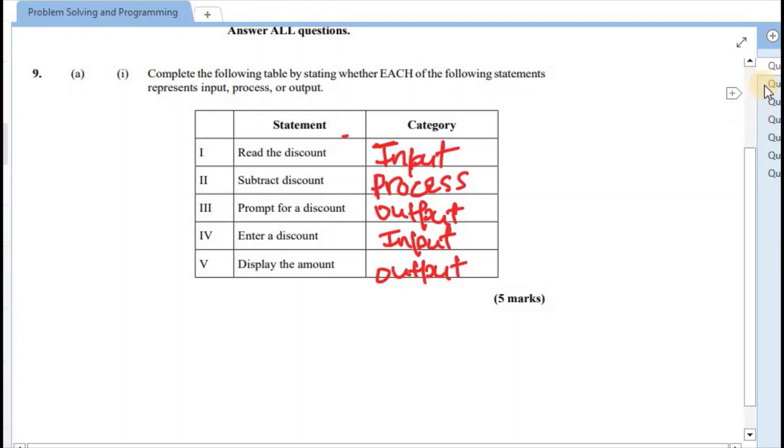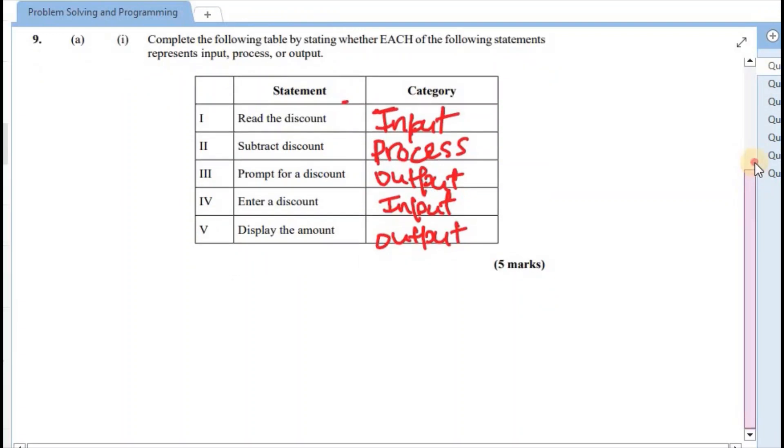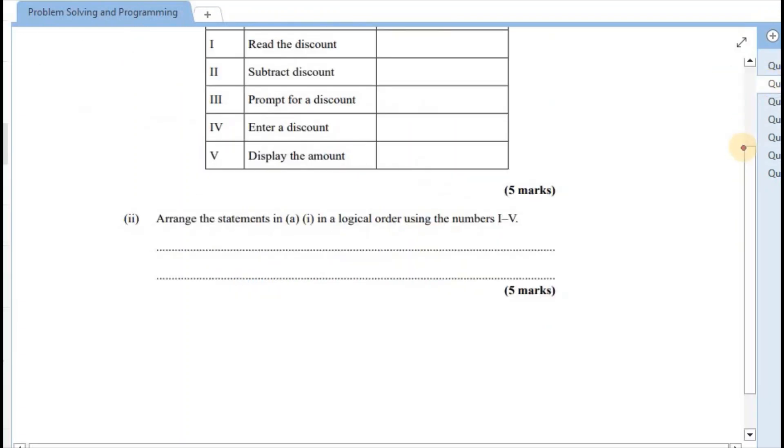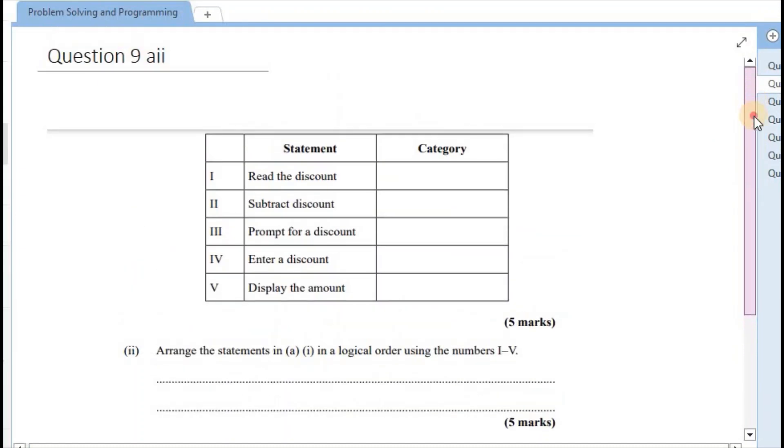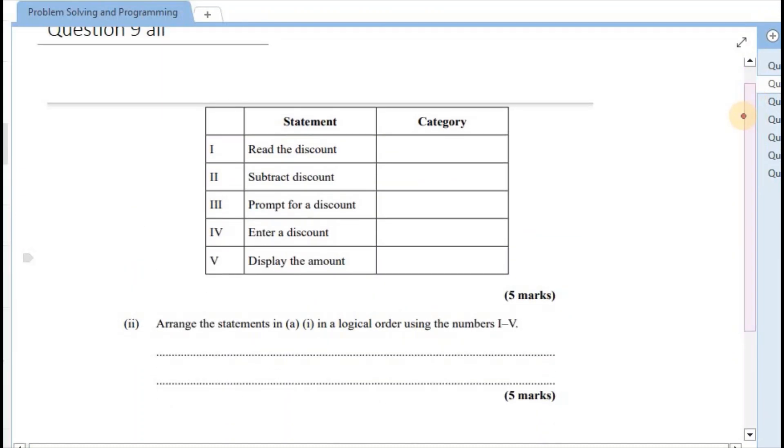Alright, total of five marks for that aspect of question 9. We're moving on to 9aii, and this question says that we ought to arrange the statements in this diagram here in logical order using the numbers 1 to 5. So which one would be the first step, second, etc.